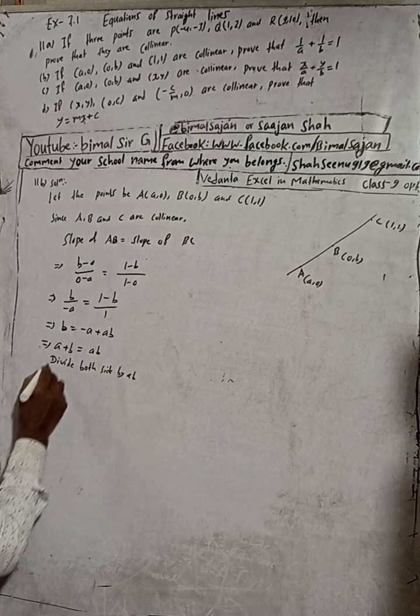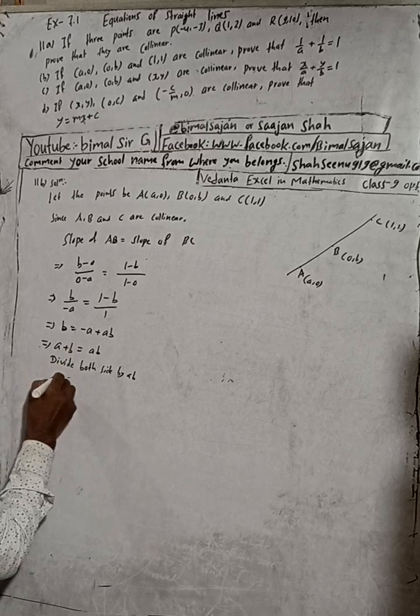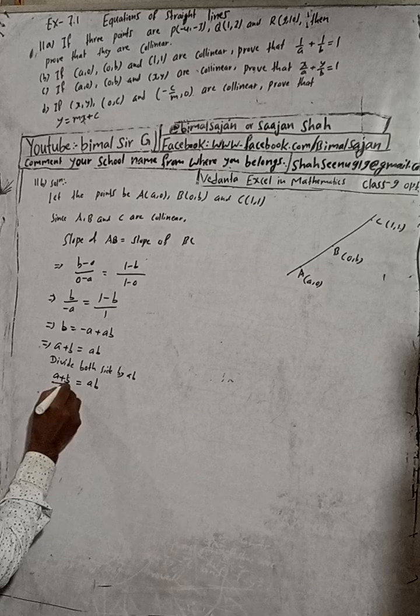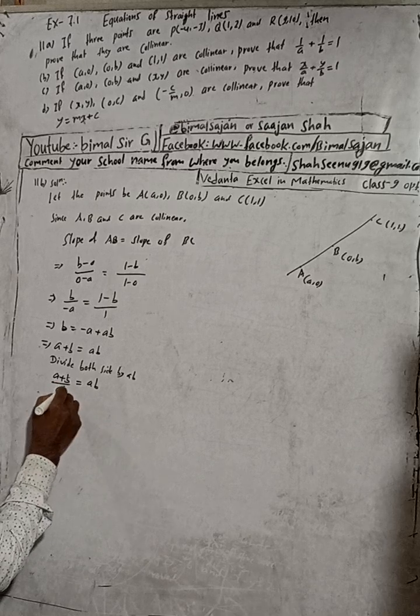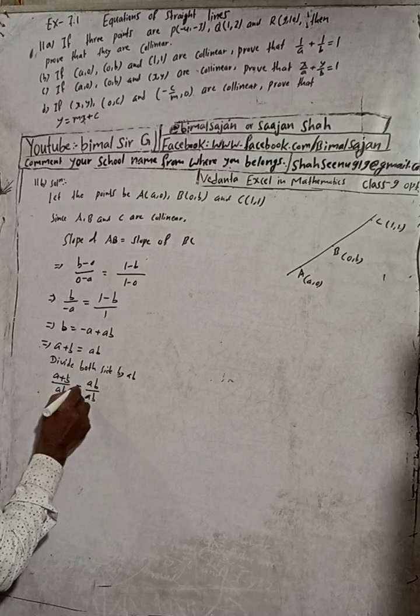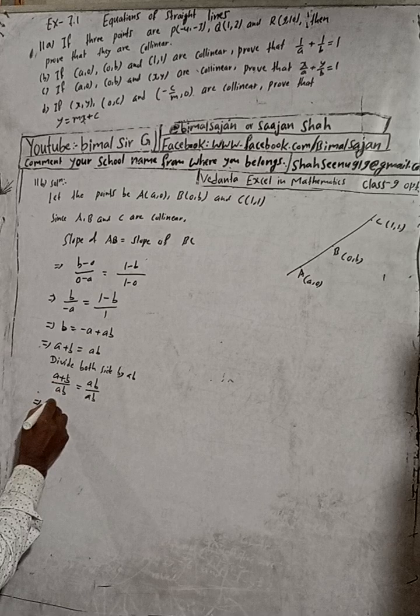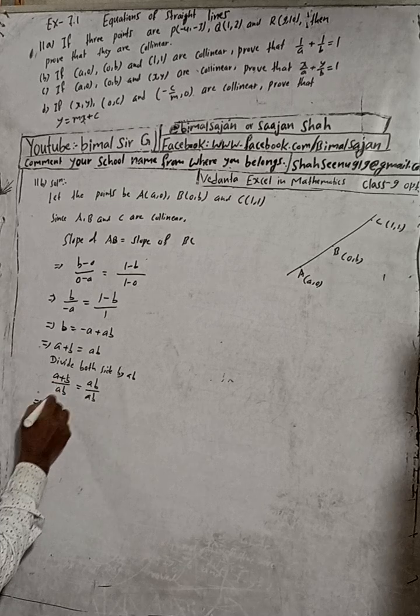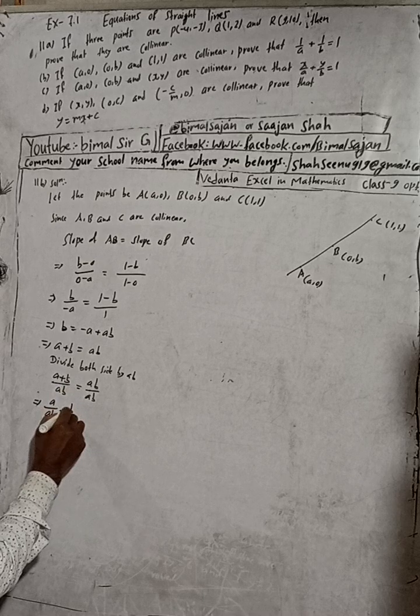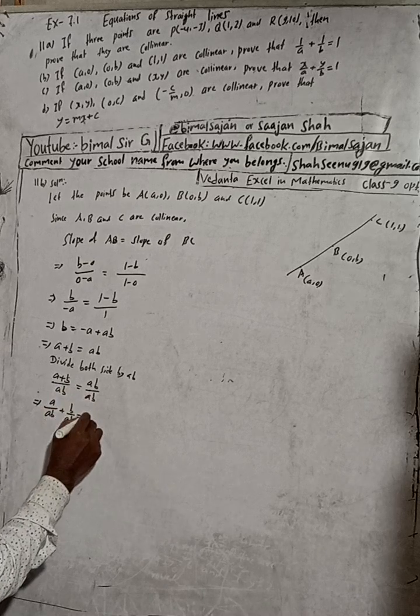Dividing both sides by ab means a+b = ab. Dividing both sides, this is divided by ab. When we separate this, a/ab + b/ab = ab/ab = 1.